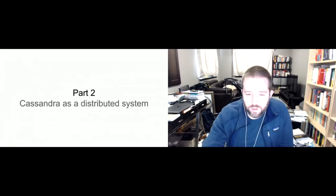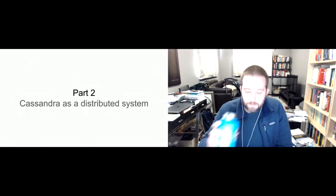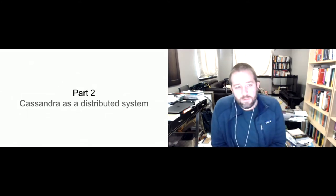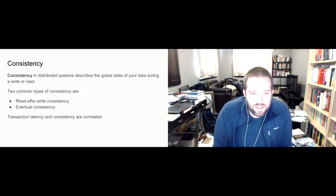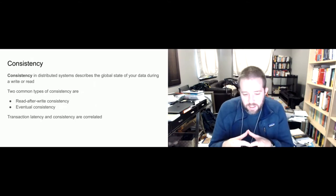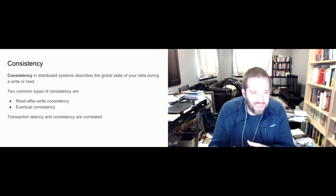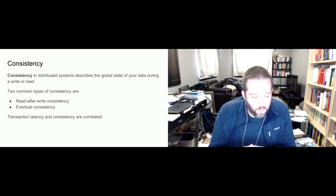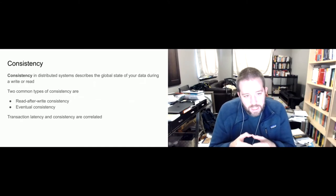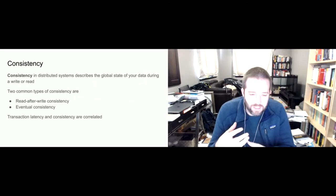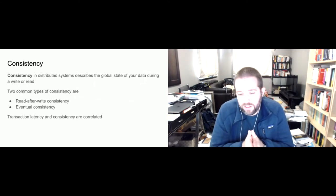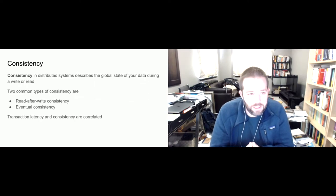What about Cassandra as a distributed system? When we talk about distributed systems, consistency is one of the key concepts we need to deal with. You can think about it as the global state of your data during a read. We typically see two kinds of consistency discussed — though these are not the only kinds in a distributed system.